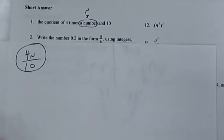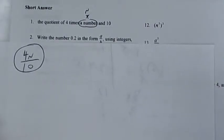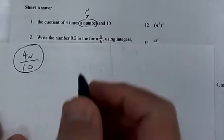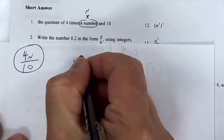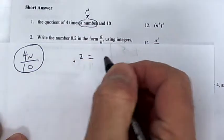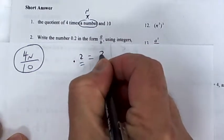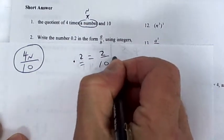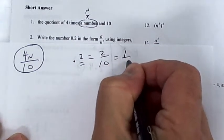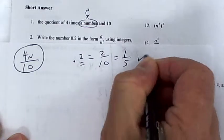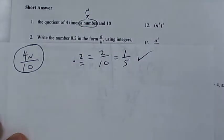The next one says write 0.2 in fraction form. The 2 is in the tenths position, so it's 2 over 10, which reduces to 1 over 5.